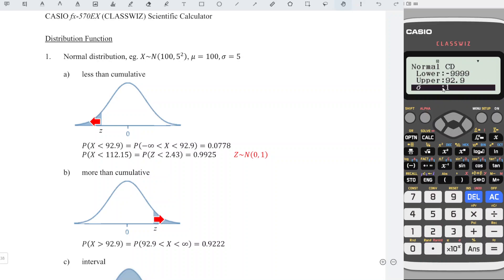Sigma is the standard deviation, for this case it's 5. Press equal. Mu (mean): 100. Press equal. Equal again to obtain the correct probability.